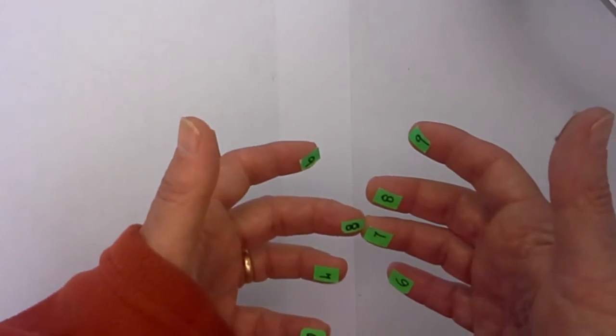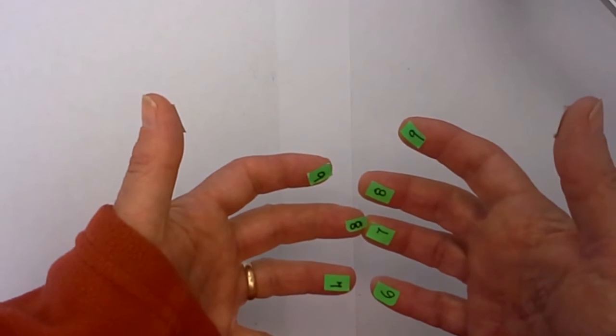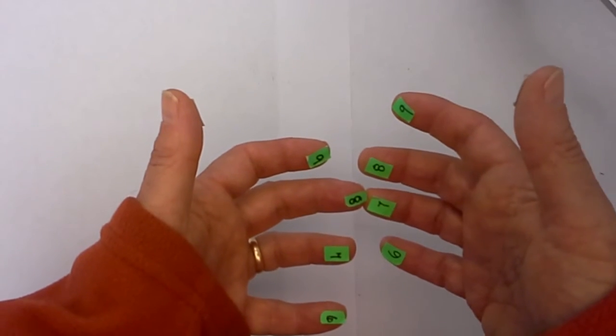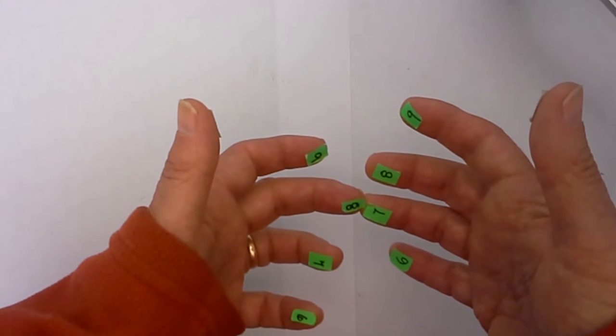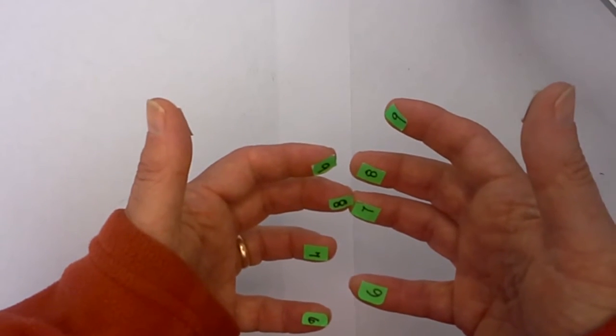How about 8 times 7? I touch the 8 on the left and the 7 on the right. I have 2 on this side and 3 on this side which is 6. Then I count the touching fingers - 1, 2, 3, 4, 5 - so that would be 56.